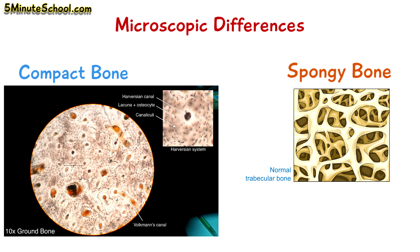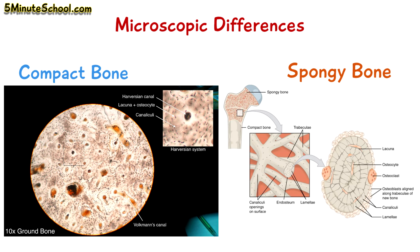The individual units which make up spongy bone are called trabeculae. Because of this arrangement of trabeculae, spongy bone has a very high surface area. Trabeculae arrange themselves in the direction of mechanical load, so because this can change, it's very easy for trabeculae to remodel and change their structural position. Within the spaces of trabeculae we have bone marrow, where hematopoietic stem cells produce red blood cells, white blood cells, and platelets.